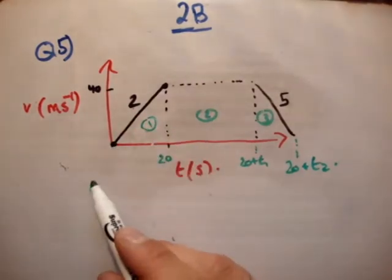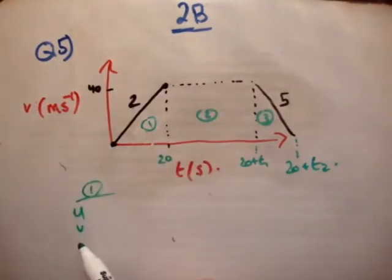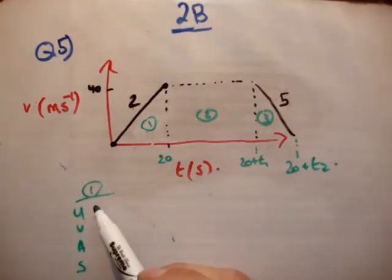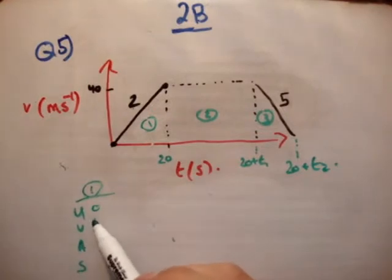Let's do region 1. I'm going to write U, V, A, S, and T. So initial velocity was 0, final velocity was 40, the acceleration was 2.